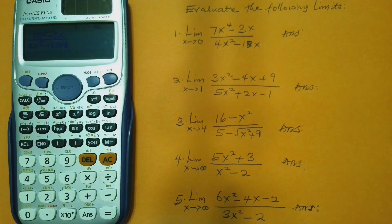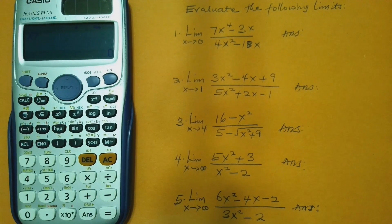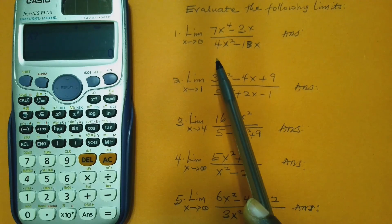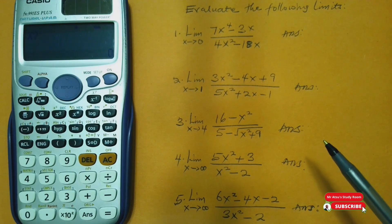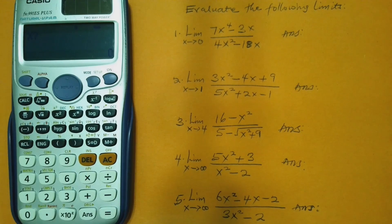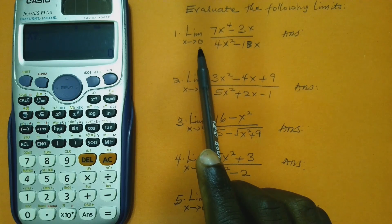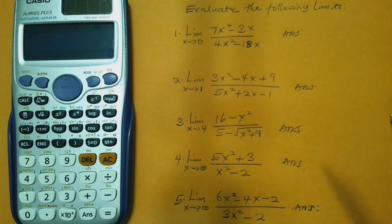Now we go to step two, which is to press the AC function — so I press AC. Step three is for us to press a number very close to the limit. The limit is x approaches zero, so a number close from the left can be negative 0.000001, or from the right, 0.000001. But remember, limit means a number very close to this number, not the exact number. If you put the exact number, your calculator will give you an error.